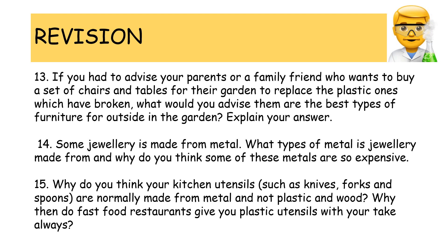Number thirteen: if you had to advise your parents or a family friend who wants to buy a set of chairs and tables for their garden to replace the broken plastic ones, what would you advise them? What are the best types of furniture for outside in the garden? Explain your answer. Number fourteen: some jewelry is made from metal. What types of metal is jewelry made from, and why do you think some of these metals are so expensive?